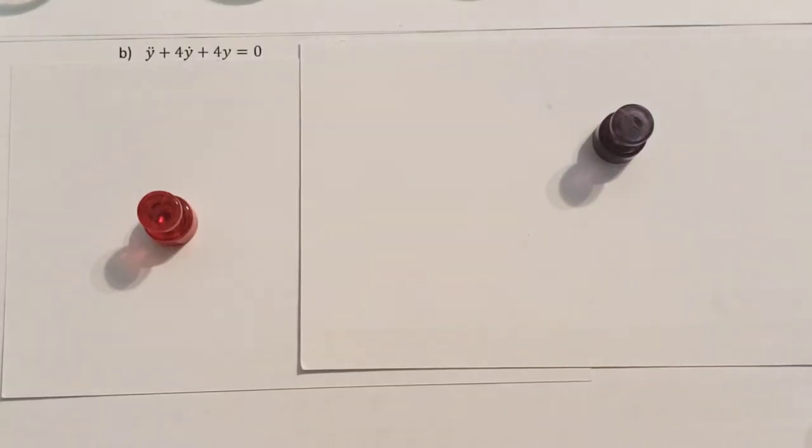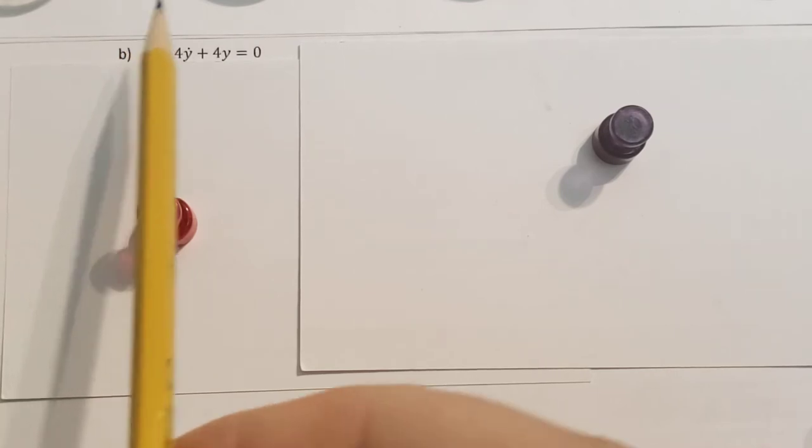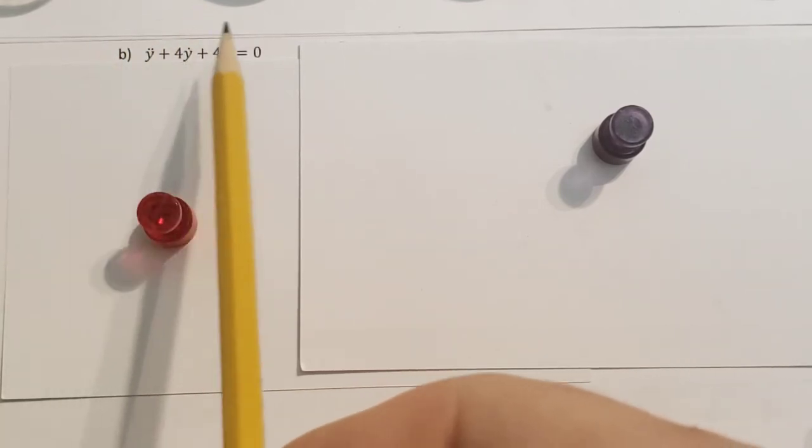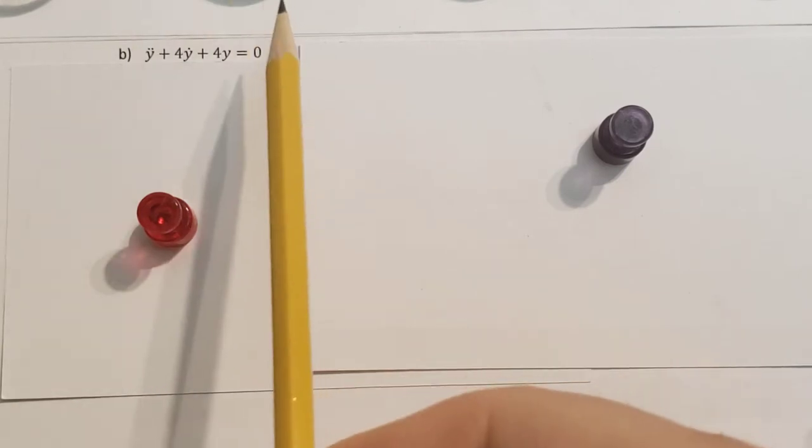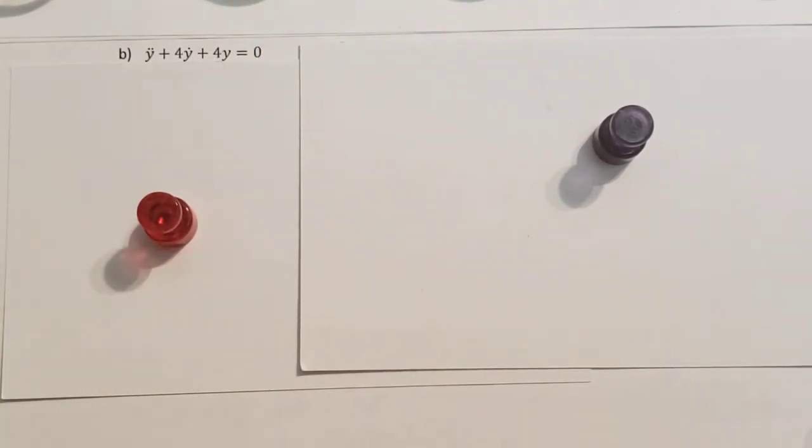All right, let's solve this differential equation. We have y double prime plus 4y prime plus 4y equals 0. Now, there's nothing on the right-hand side, it's homogeneous, so that makes our life a lot simpler.